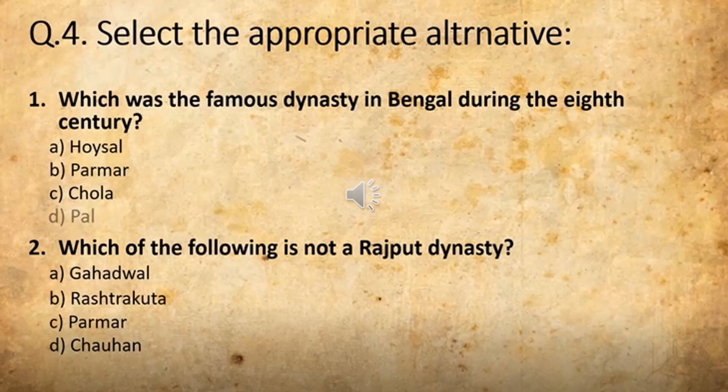The options are: A) Gadwal, B) Rashtrakuta, C) Parmar, and D) Chauhan. The correct answer is Rashtrakuta. Moving on to the third one: Whom did Prithviraj Chauhan defeat in the first battle of Tarain? That is on the next slide.